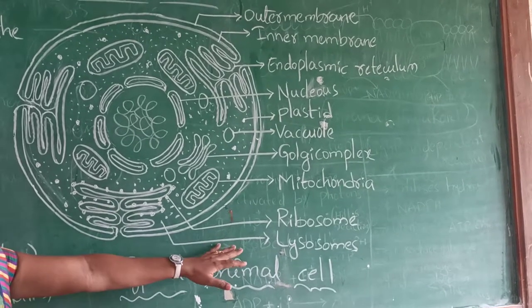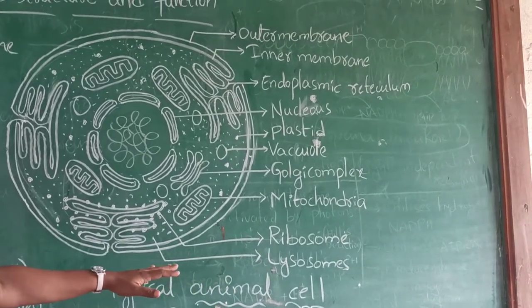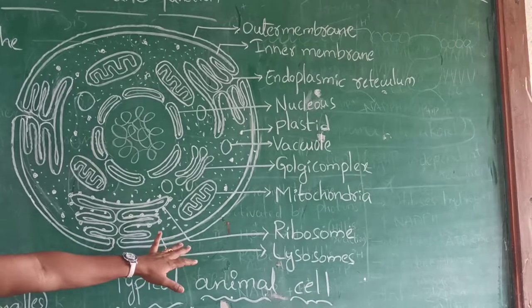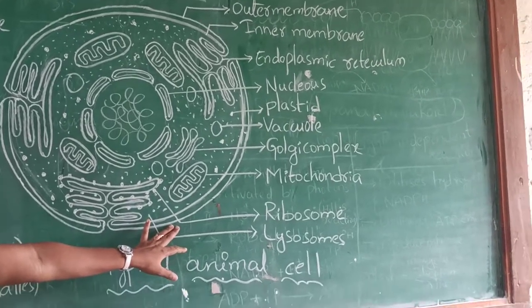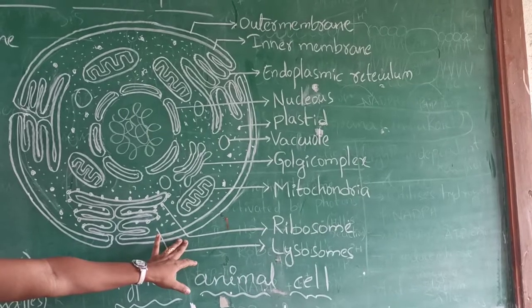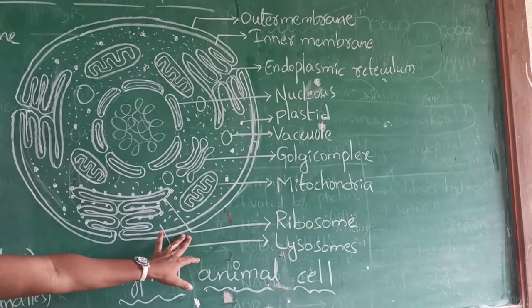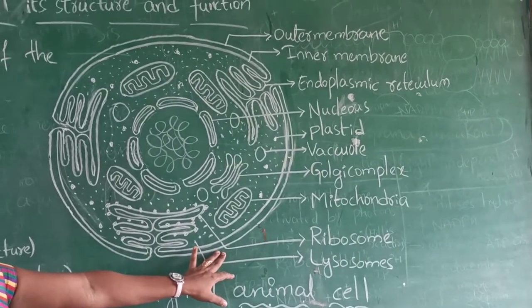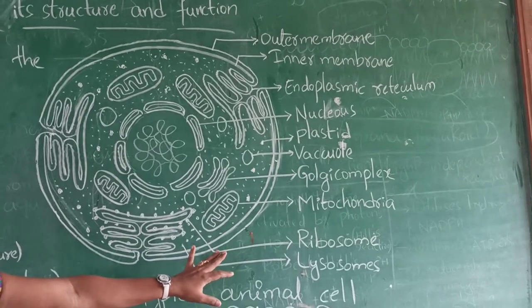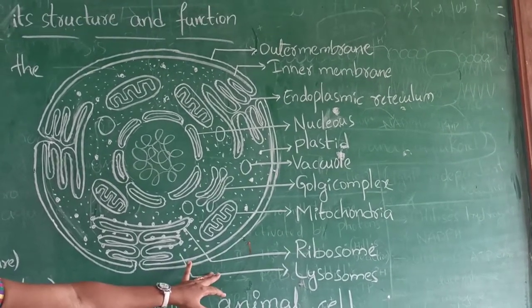We know that lysosomes will be used for disrupting the waste material. Next, ribosome. Ribosome will be involved in the protein synthetic process. We have two types of ribosomes, that is 70S and 80S ribosome.